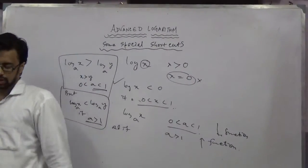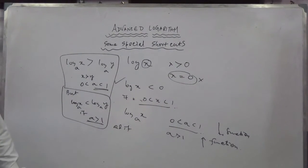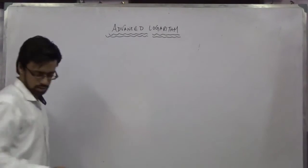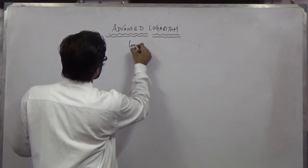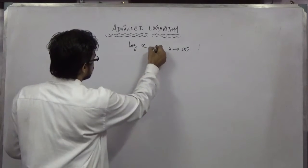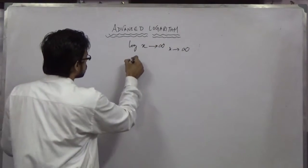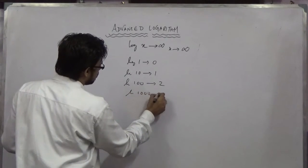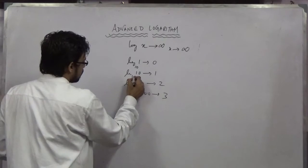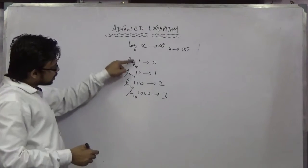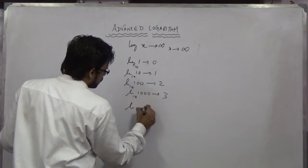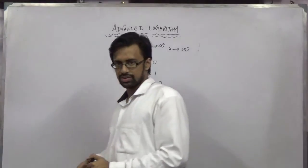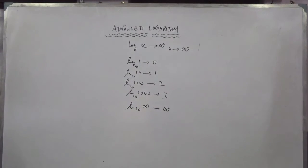Another advanced part: what happens if log x and x tend to infinity? The value is infinity. Because log 1 is 0, log 10 is 1, log 100 is 2, log 1000 is 3 — the values are increasing with base 10. So if x goes to infinity, log x also goes to infinity. Log has an increasing pattern with respect to its base.